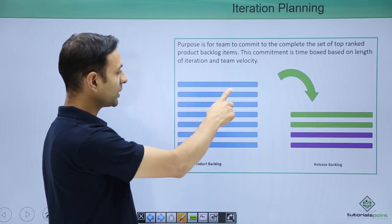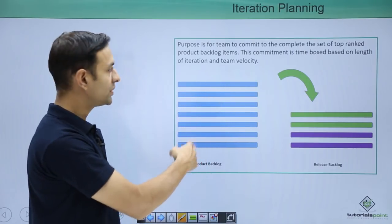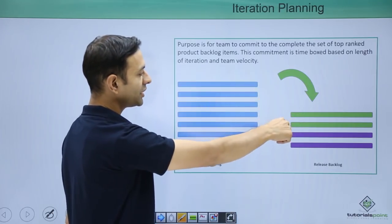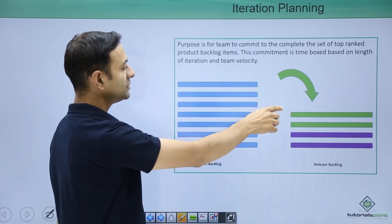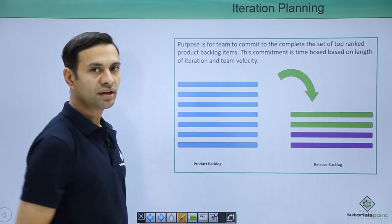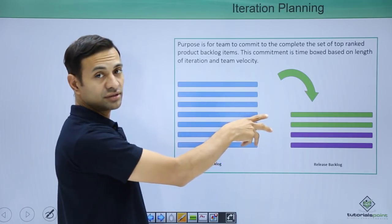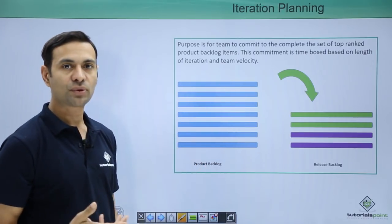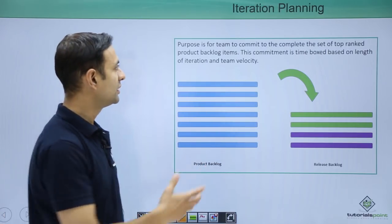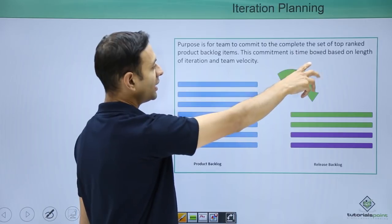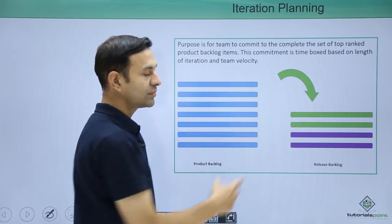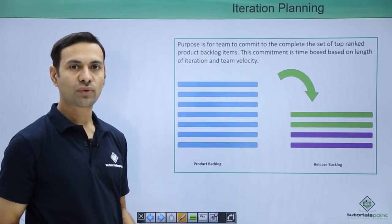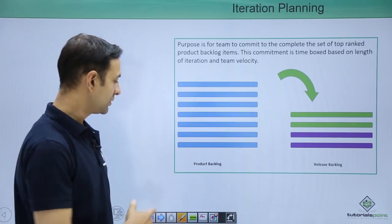Here we can see our product backlog has a set of features which are prioritized or ranked, then these are going to move into our iteration. This commitment is based on the length of the iteration and team velocity — how many points a team is supposed to do in a particular iteration. We have a time box because an iteration is 2 weeks or 4 weeks, and your velocity is basically 10 points or 14 points based on your past experience.